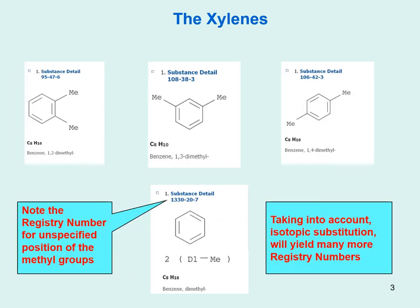Here I am looking at xylene, and you see three different registry numbers for the ortho, meta, and para xylene. The numbers are not even near each other numerically — again, the numbers themselves say nothing about the compound. Many times in the literature, people writing up their papers are sloppy and will just say xylene. So Chemical Abstracts has a separate registry number where the position of the methyl groups is not specified. If you're searching for para-xylene, you would search that registry number and then decide if you also want to include the registry number where the position is not specified. Taking into account isotopic substitution will give you many more registry numbers.